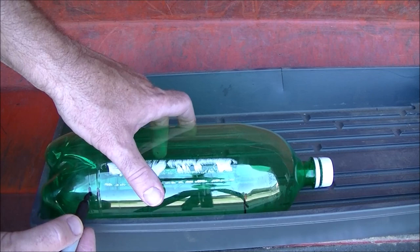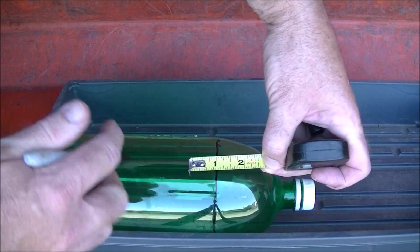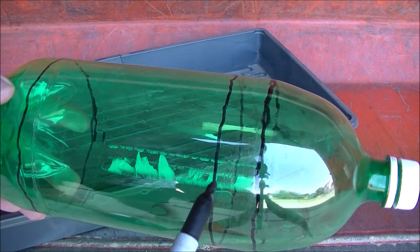I'm also going to do that on the bottom of the bottle and spin it around in the tray. Now I'm going to measure an inch down from that top line and also spin the bottle so it's all the way around the bottle. Now we have three lines: one at the bottom, one up about five inches, and the other one at six inches.